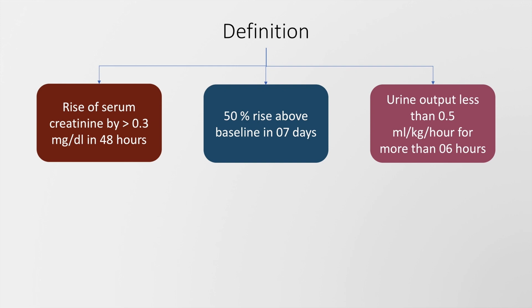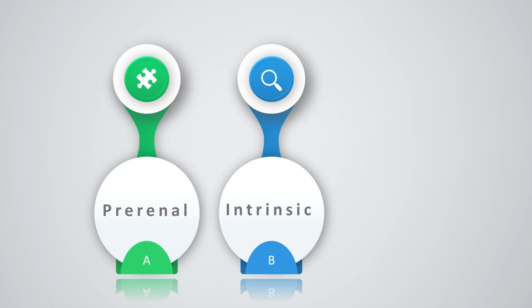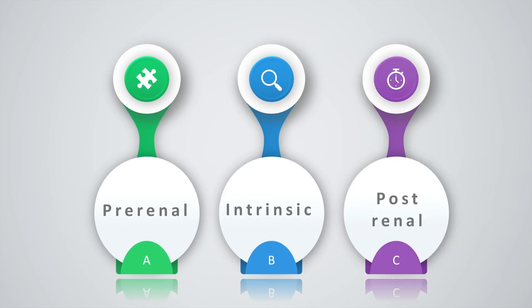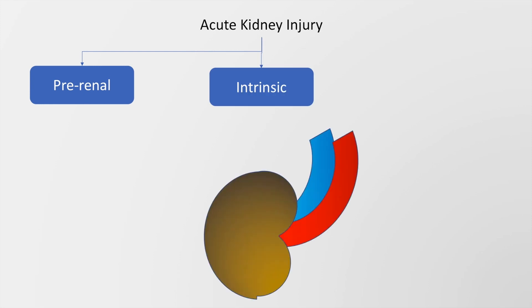Acute kidney injury may either be pre-renal, intrinsic, or post-renal. This classification helps us to understand the mechanism and etiology, and also guides the management of acute kidney injury.